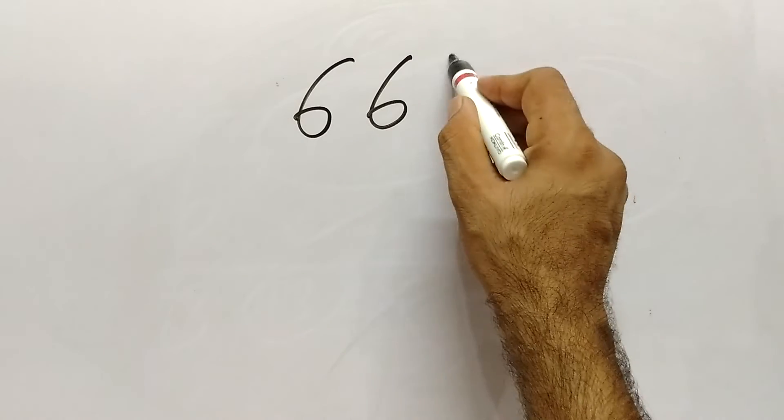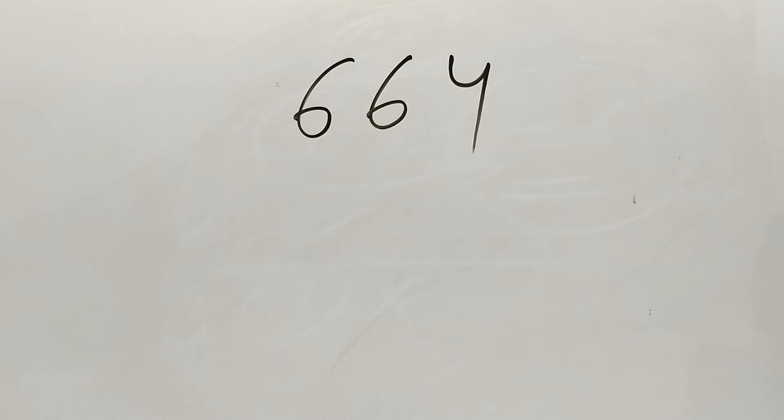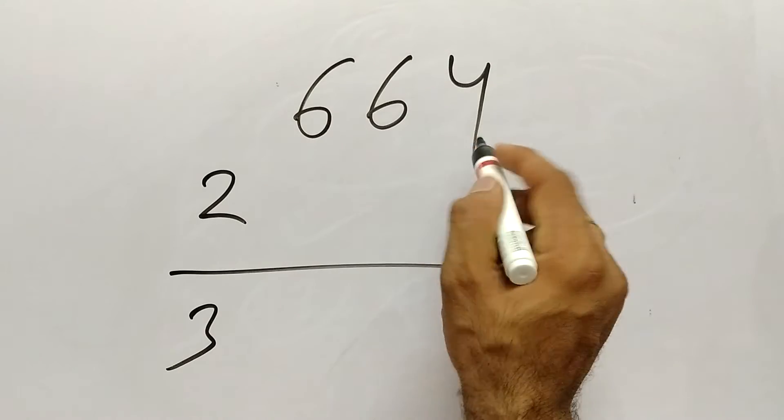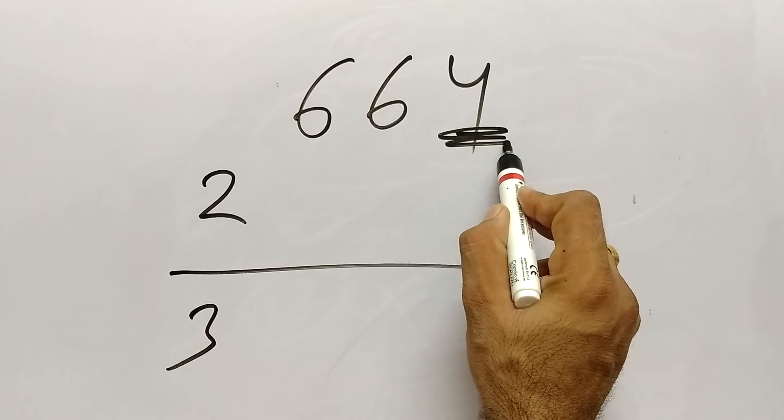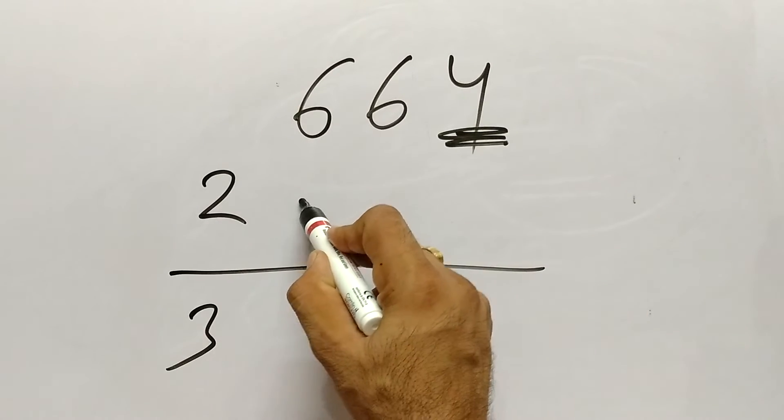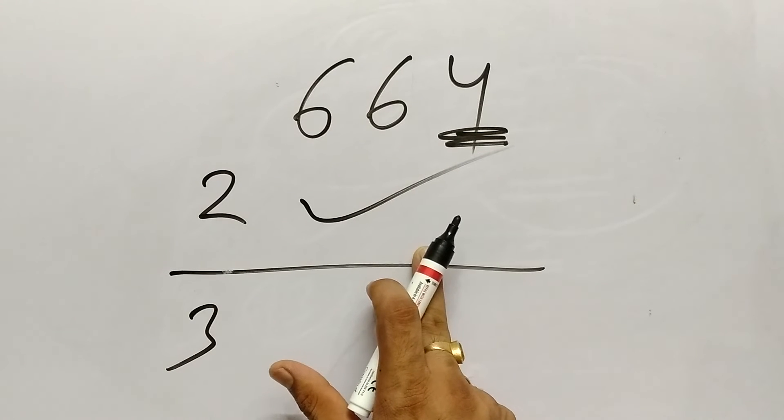Suppose the number is 664. Okay so what we are going to do: 2 and 3. Last unit digit pe kya aa raha hai? 4. So it is an even number, so we can say that it is divisible by 2.